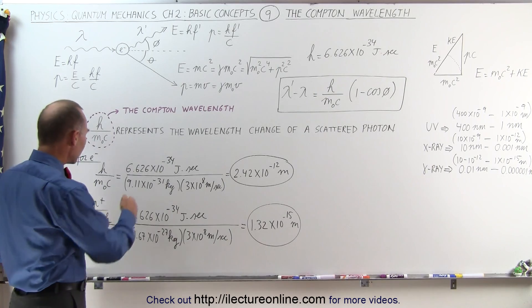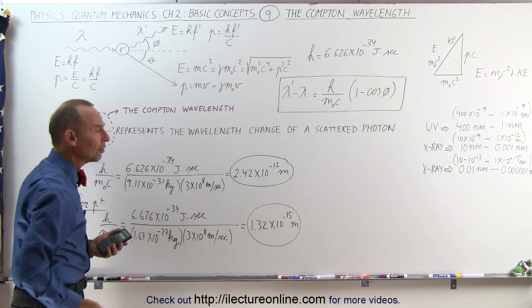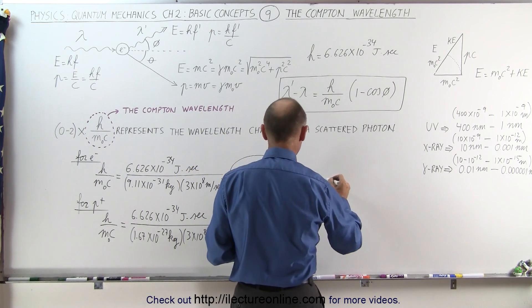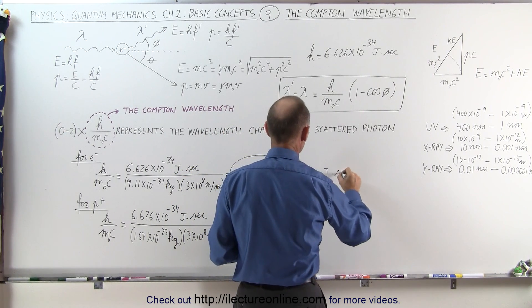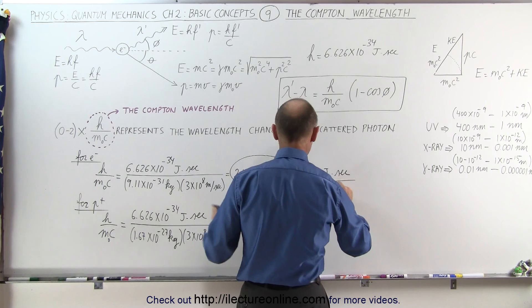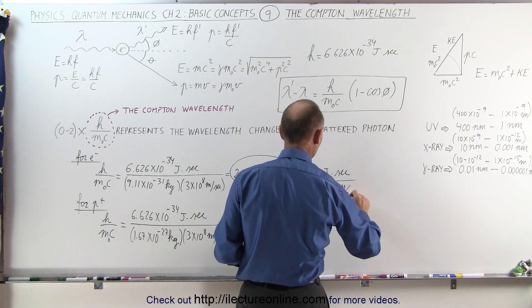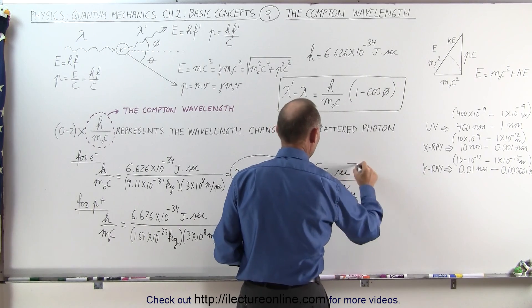You may also wonder, how do these units end up being meters? So let's explore that for a moment. So the units of joules times seconds divided by kilograms times meters per second.